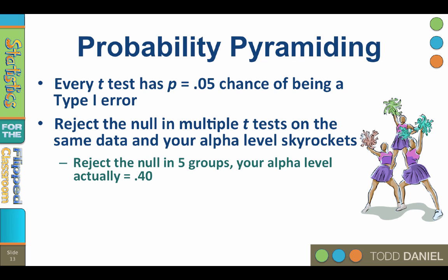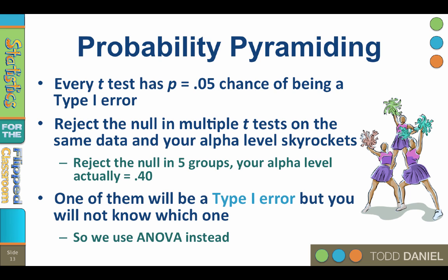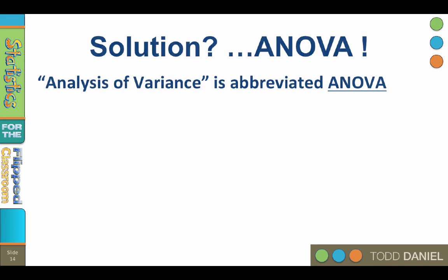For instance, if you reject the null in just 5 groups, your alpha level is functionally about .40. One of your tests will identify an effect that does not exist — one of them will be a type 1 error — but you will not know which one was in error. You will care, because one of your published findings is going to be a lie, and you won't know which one. So, the solution is analysis of variance.